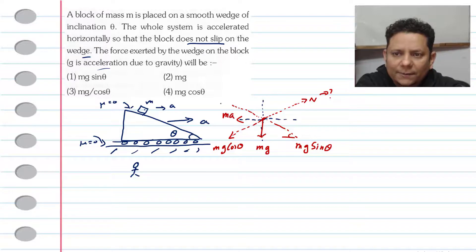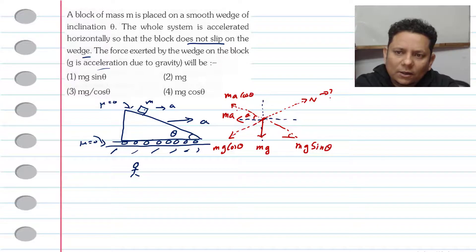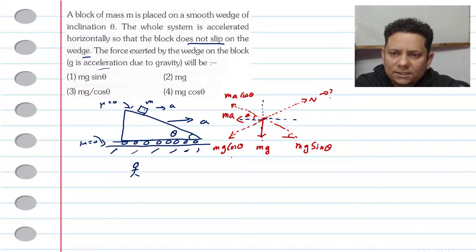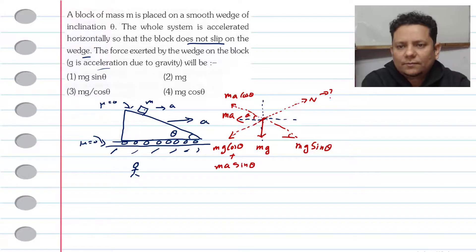Now we introduce the pseudo force MA acting horizontally. Taking its two components: the component perpendicular to the incline is MA cos theta, and the component along the incline is MA sin theta.